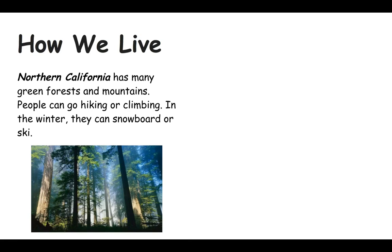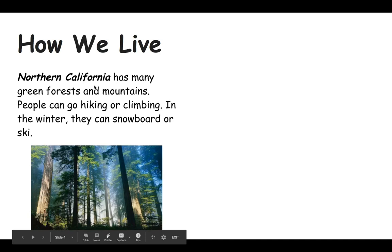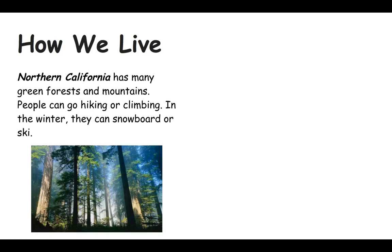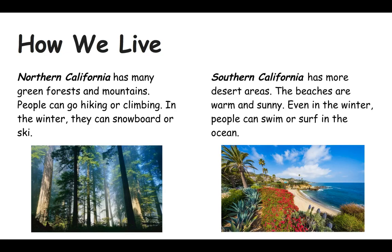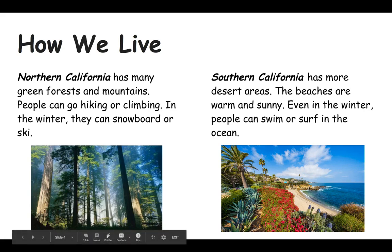On this slide I'm going to talk about two different locations. The first is Northern California — remember California is the state we live in, and this is all the way at the top of the state. Northern California has many green forests and mountains; people can go hiking or climbing, and in the winter they can snowboard or ski. This is a picture of the Redwood Forest located in Northern California. Another location is Southern California, where we live. Southern California has more desert areas; the beaches are warm and sunny even in the winter, and people can swim or surf in the ocean.